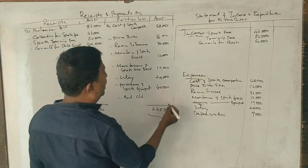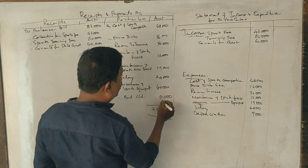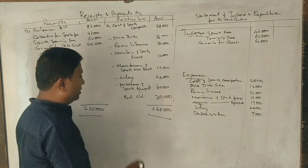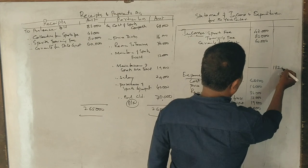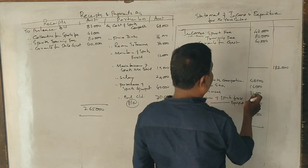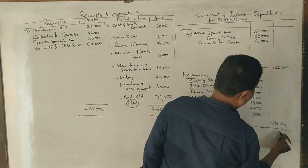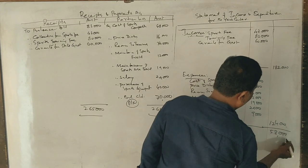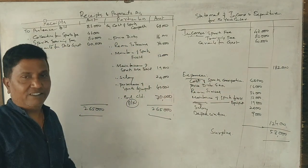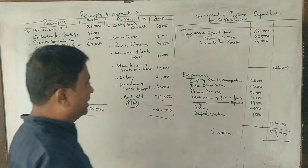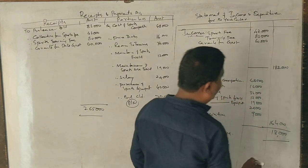Total on debit side, 65,000. Balance, 70,000. Income, 1,82,000. Total expenses, 1,18,000. Surplus, 64,000. Total, 1,82,000 equals 1,82,000. Correct.